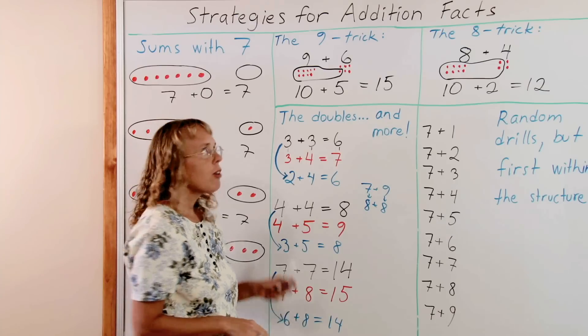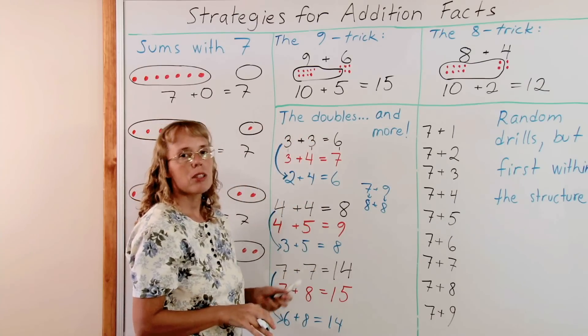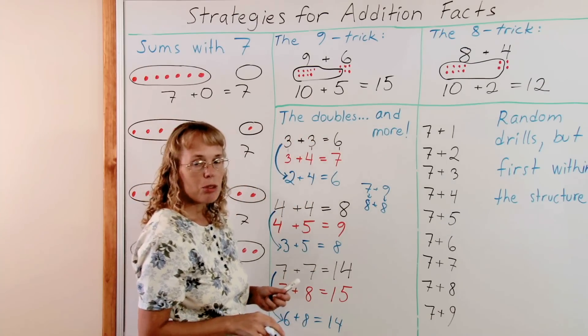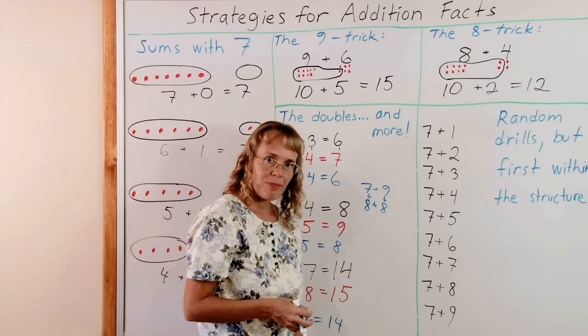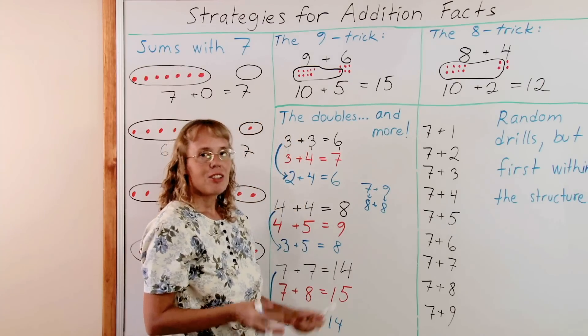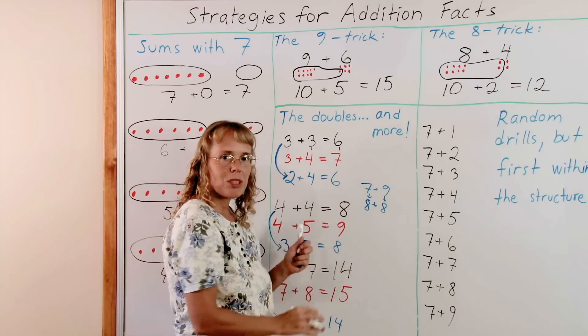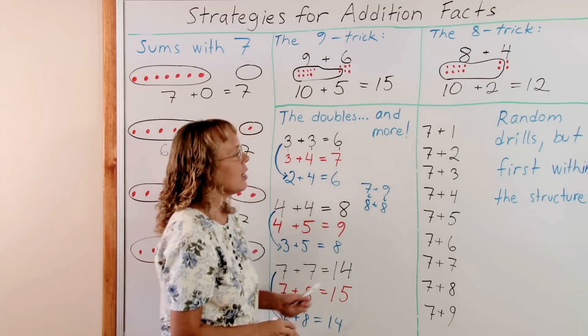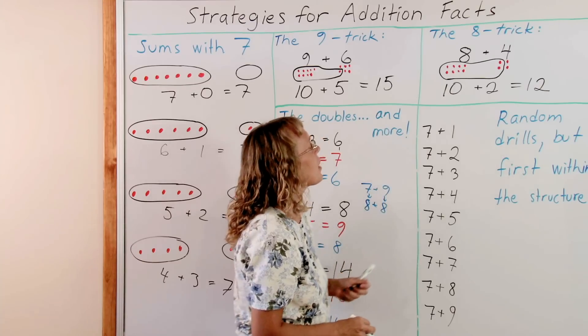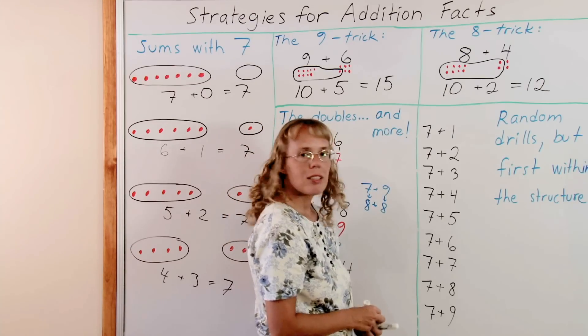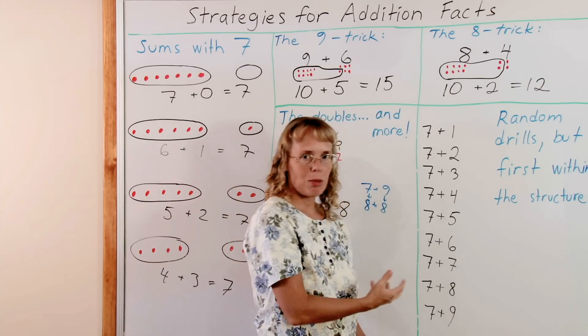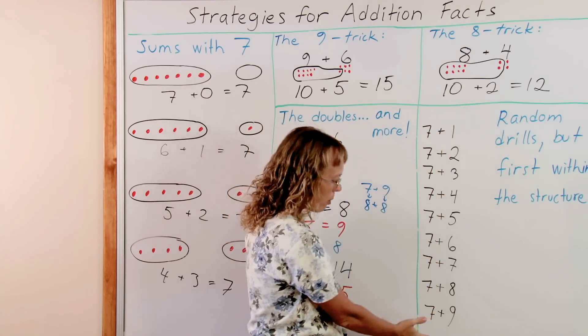Now, once you have gone through these kind of strategies with the students, then it's time to try some random drill. Not before. I don't like starting with random drill. But going through concepts and strategies. And then we arrive at random drill. But first we do it in the structure of the table itself. This is an addition table. Sums with 7.